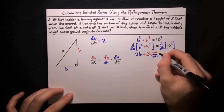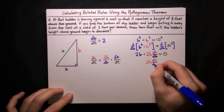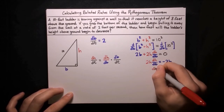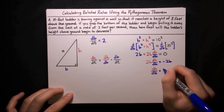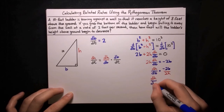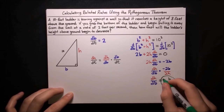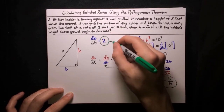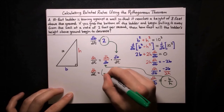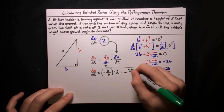On the right-hand side, the derivative of the constant 10² is zero. So we can solve for dh/db. We have 2h · dh/db = −2b. Dividing both sides by 2h gives dh/db = −2b / 2h = −b/h. Substituting that in, along with db/dt = 2, we get dh/dt = (−b/h) × 2, or more simply, −2b/h.